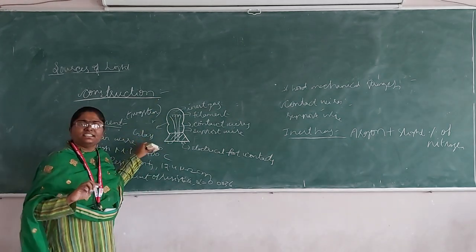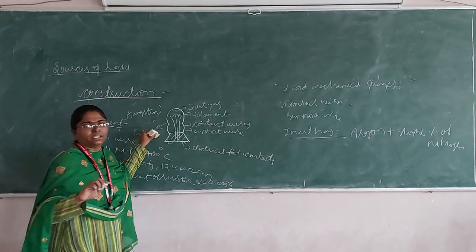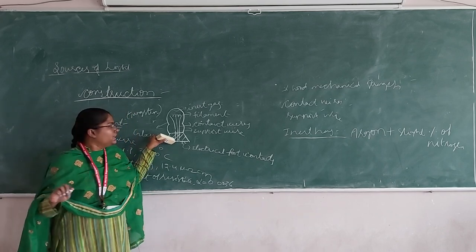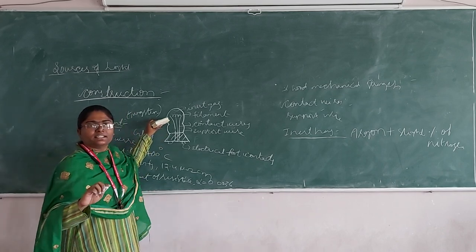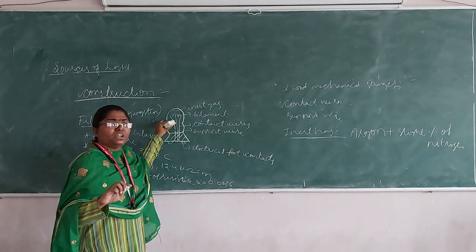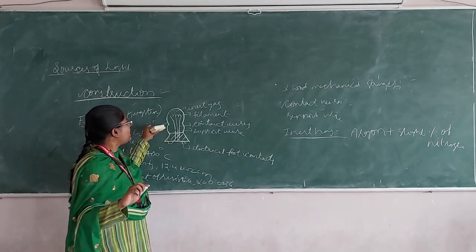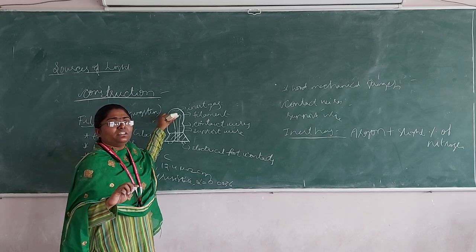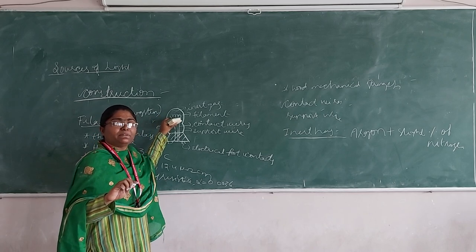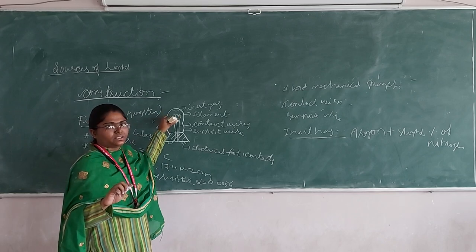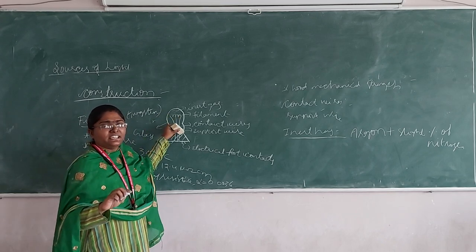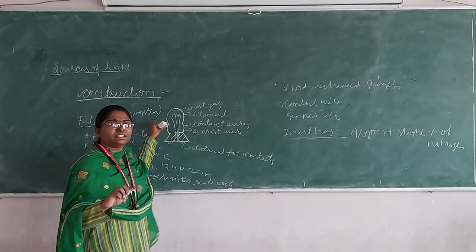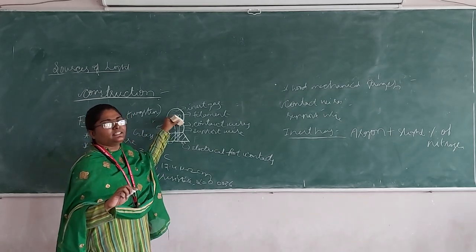Now let us see the working. Whenever we give a supply, electric current will pass through the filament. Upon flowing, the filament gets heated up. Due to the heating effect, the bulb glows. That is what it is known as an incandescent lamp — the bulb glows due to the heating of the filament.